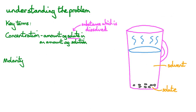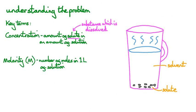Another term you might hear when discussing concentration is molarity, often written as a capital M. Molarity is defined as the number of moles in one litre of solution.